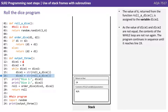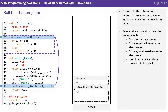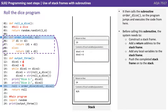The value of 6 returned from the function Roll a Dice is assigned to the variable Dice2. As the values of Dice1 and Dice2 are not equal, the contents of the while loop are not run again. The program continues in sequence until it reaches line 19, where it calls the subroutine OrderDice. The program jumps and executes the code from there. But once again, before calling the subroutine, the system constructs the stack frame, puts all the information it needs, and pushes it onto the stack.